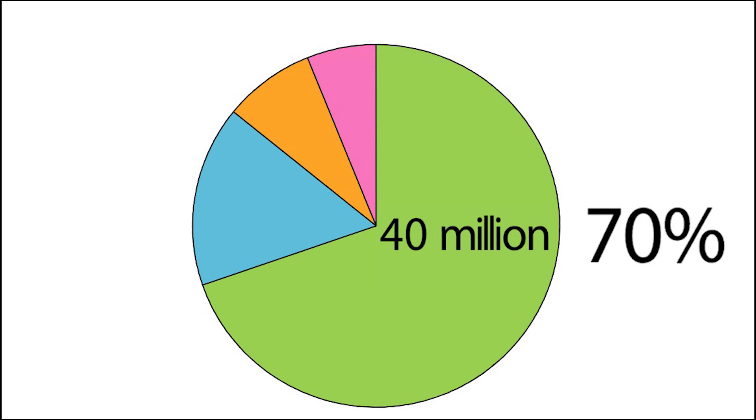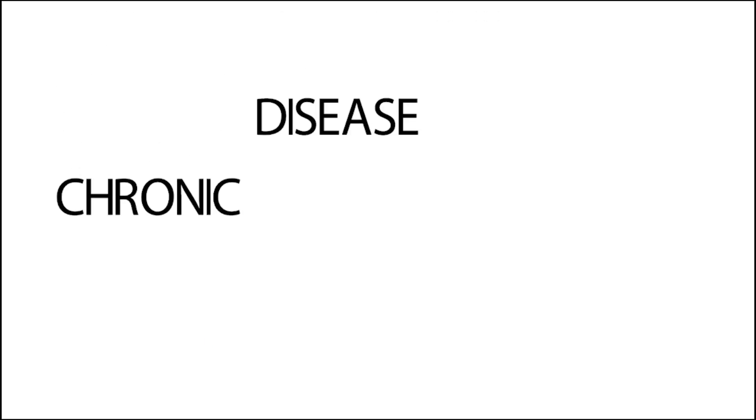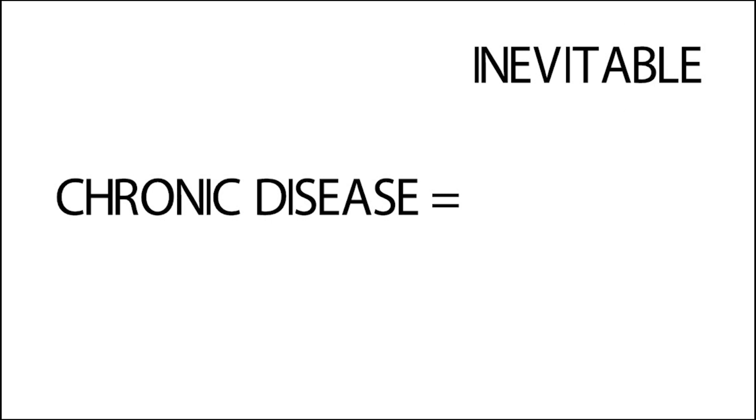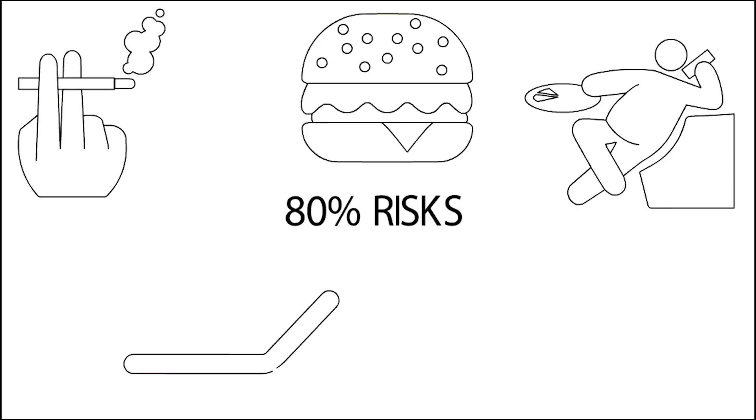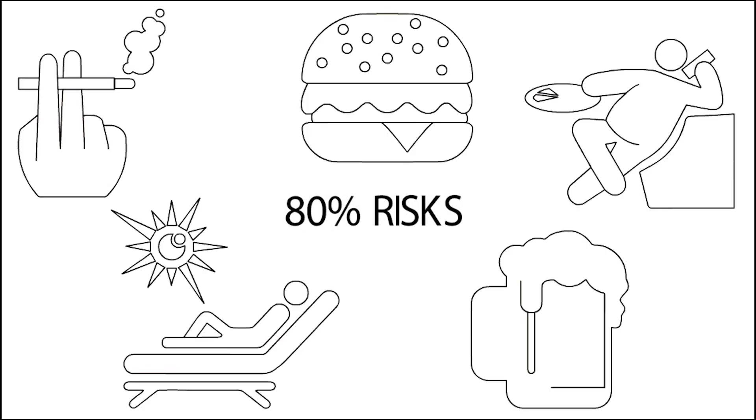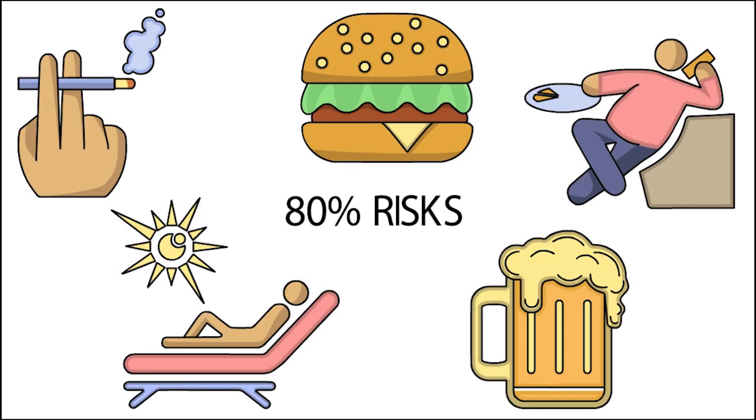As you can see, chronic diseases are currently the major public health issue. Some people say that chronic diseases are inevitable and cannot be avoided. Nothing could be further from the truth. It is estimated that 80% of chronic diseases can be prevented by changing modifiable risk factors such as smoking, poor diet and physical inactivity.